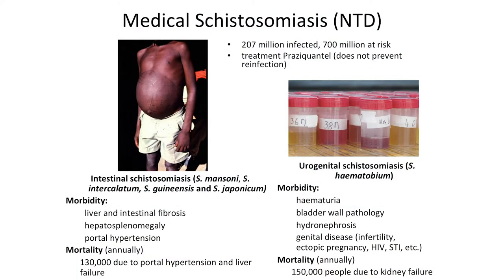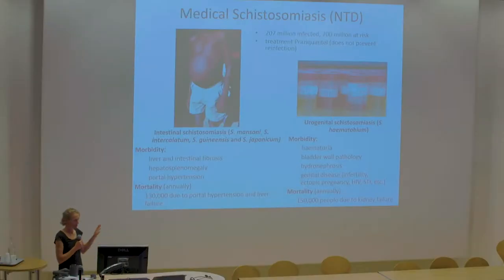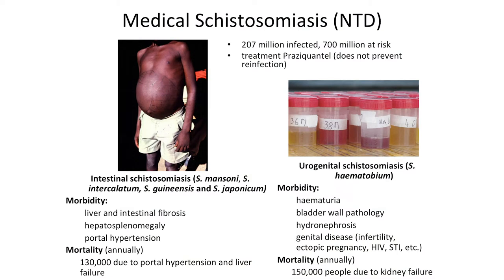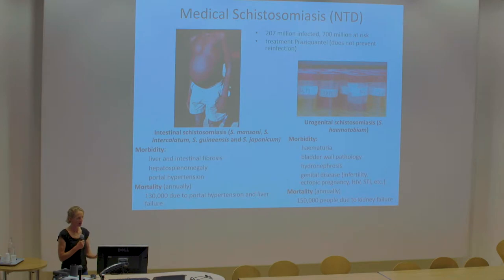I like to think of schistosomiasis as two diseases: the intestinal form and the urinary form, caused by different species. When thinking about what samples to test, you need to acknowledge these are different forms. As we get down to very low levels of infection, you don't see the severe clinical signs anymore. A lot of people feel well and don't think they're infected, and now we're seeing people not wanting to take drugs. Showing somebody that positive result is actually what gets them to take treatment so we can move towards elimination.